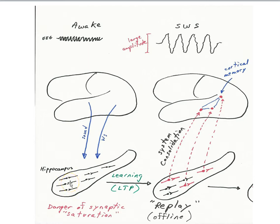In addition, the hippocampal system is a limited learning system — new learning can interfere with previously learned information. LTP has a window of consolidation, and new learning seems to interfere with previous LTP. Furthermore, new neurons are constantly born into the hippocampus, again interfering with memories stored there. These are reasons why system consolidation makes sense: to get the memories out of the hippocampal system.